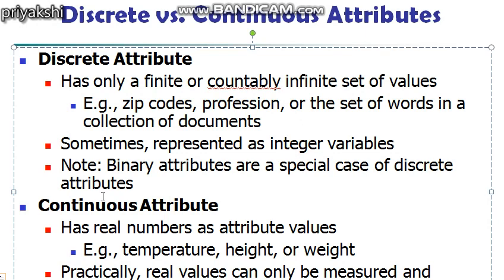Binary attributes are a special case of discrete attributes and assume only two values, which may be true and false, yes or no, or zero and one. Binary attributes are often represented as boolean variables or as an integer variable that takes only the values zero or one. The second type is known as the continuous attribute.